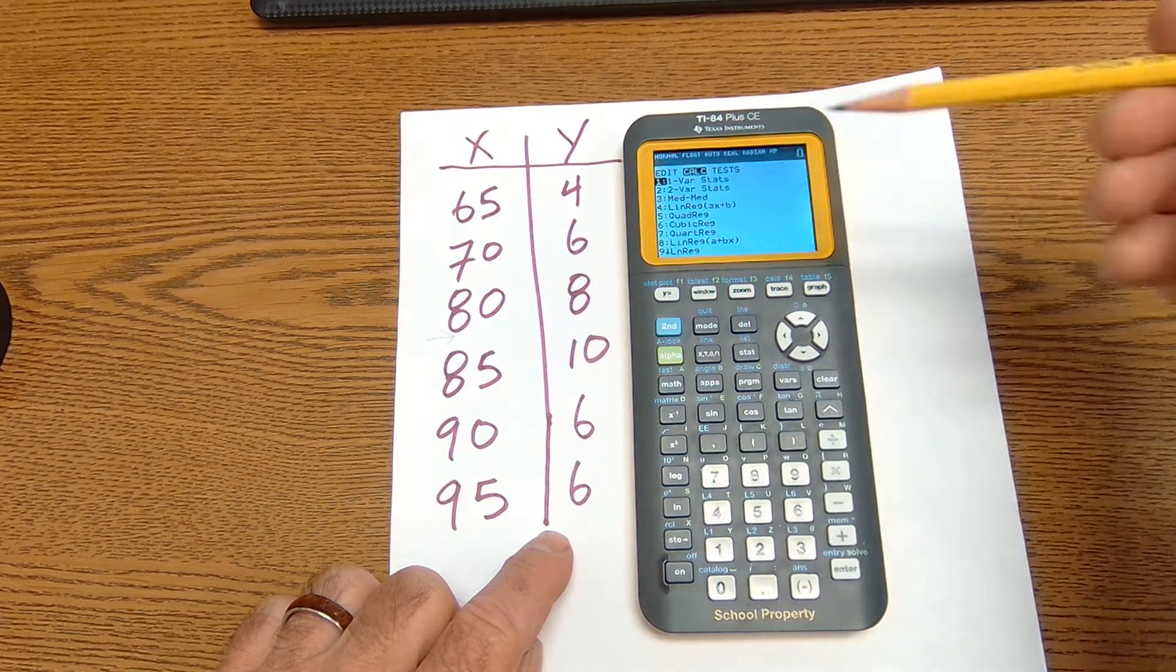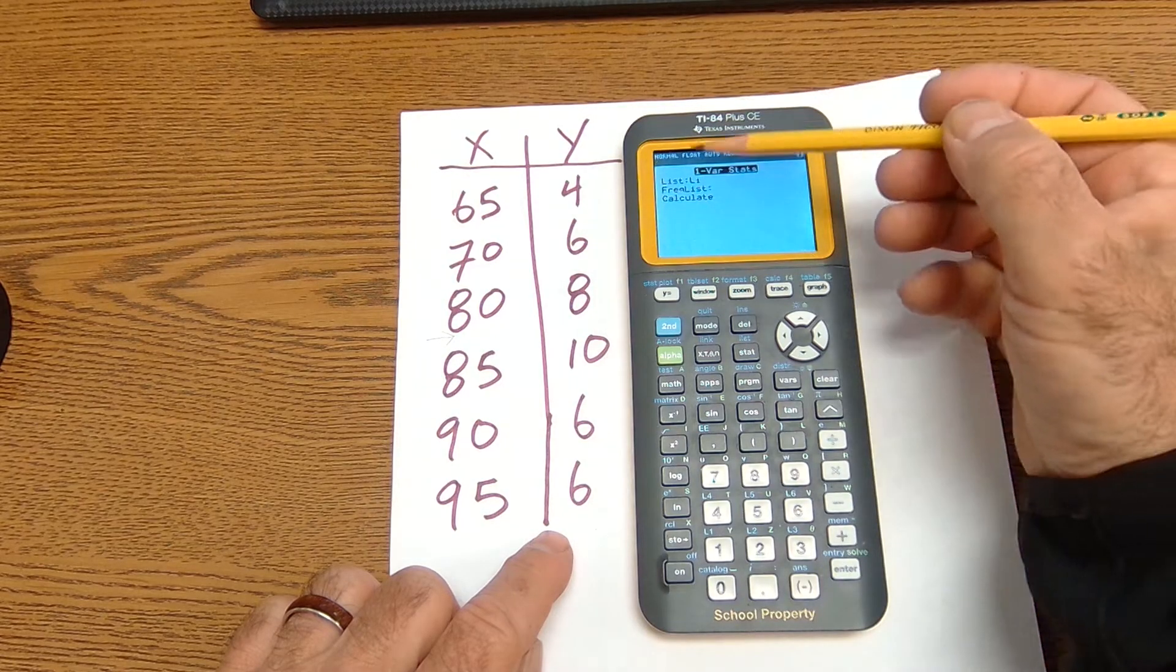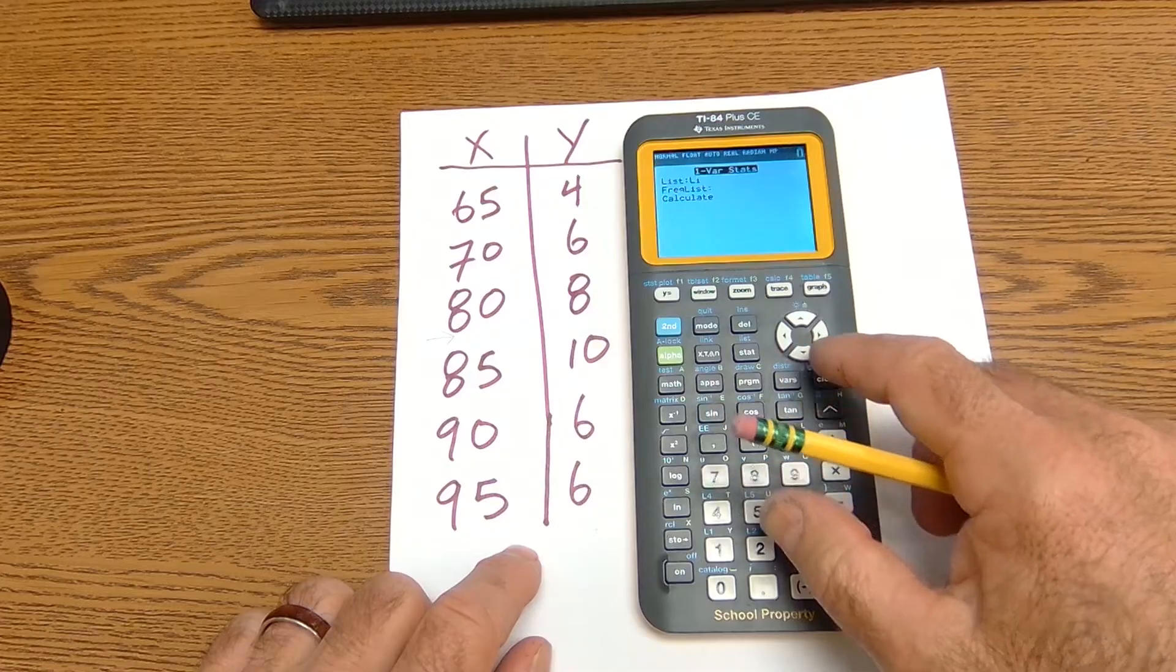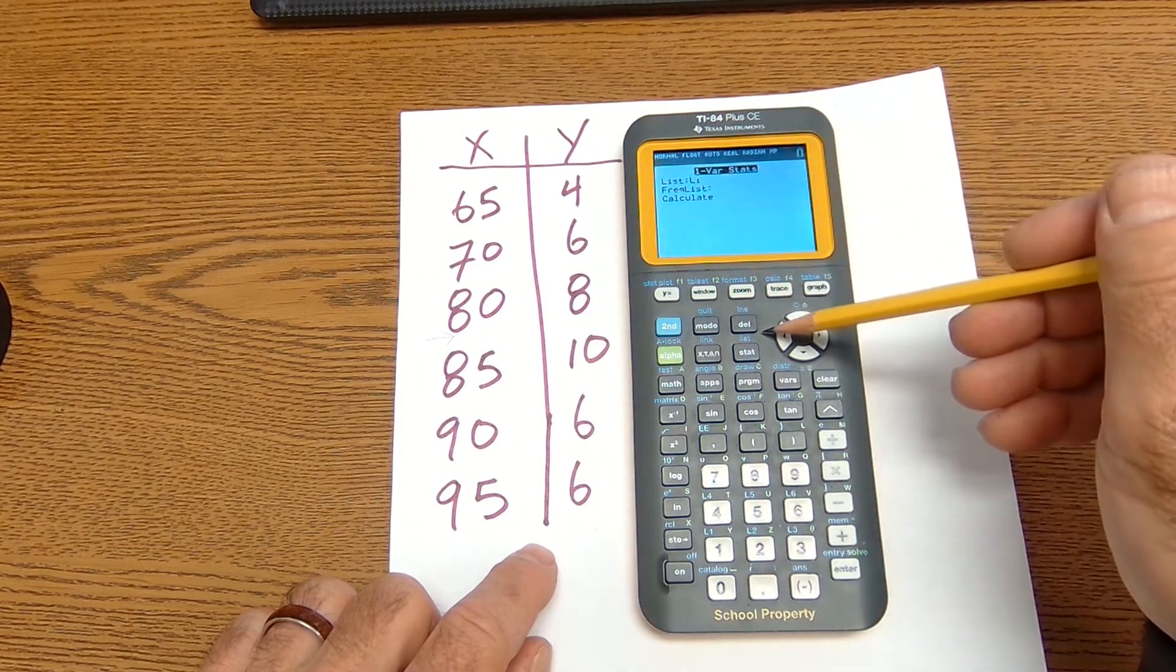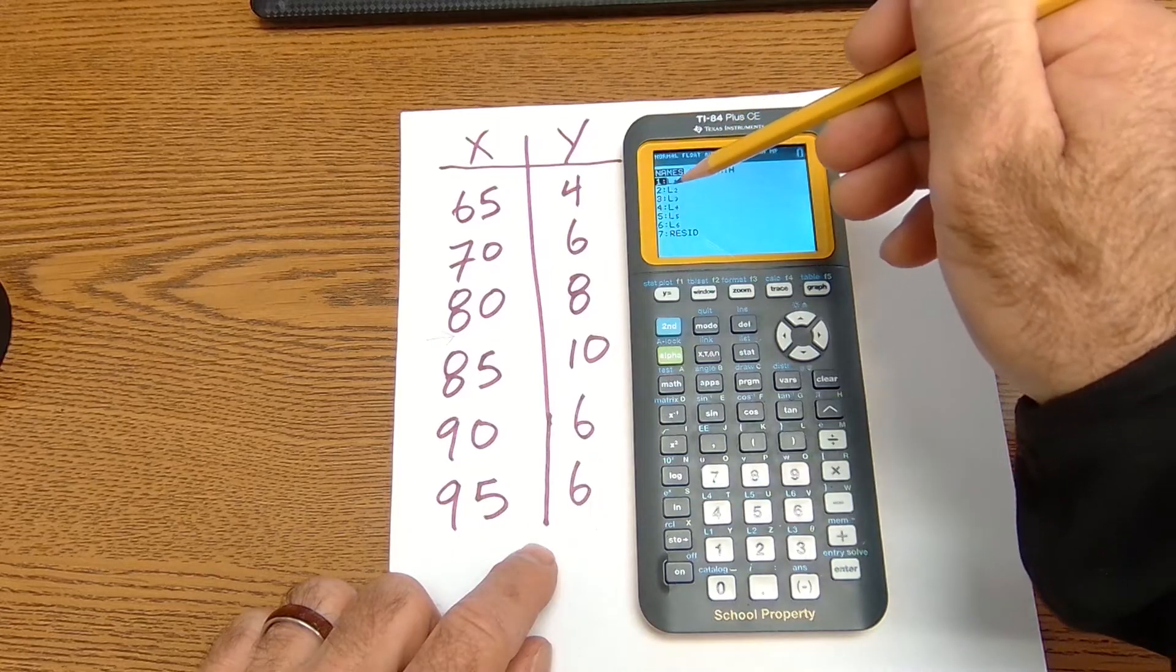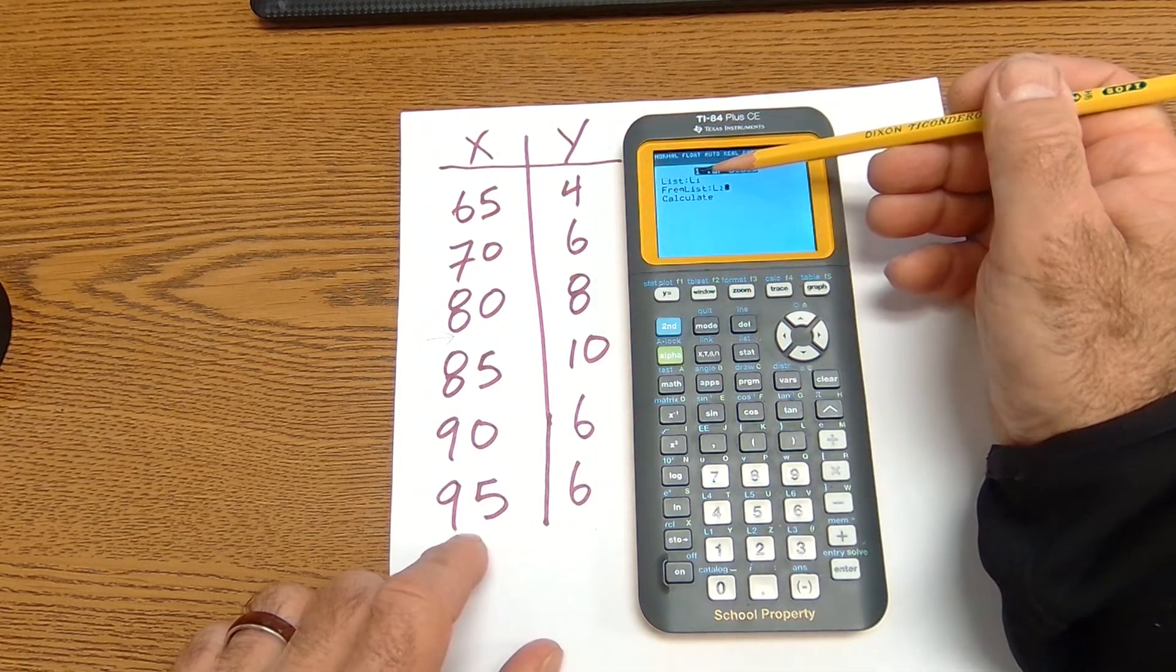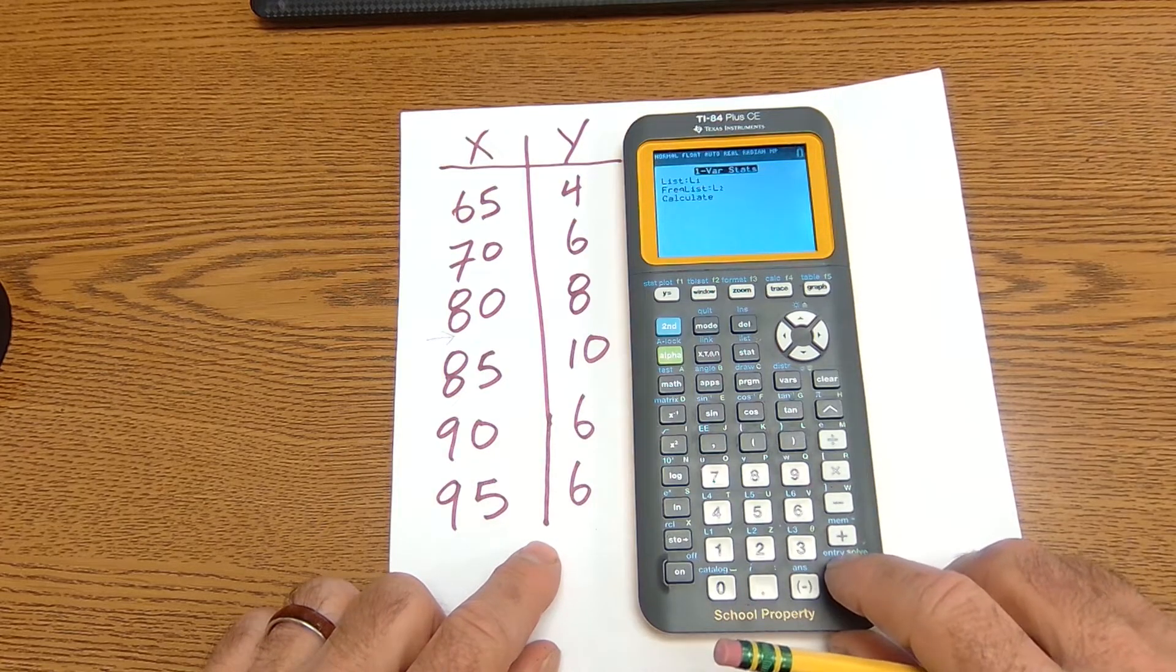So I'm going to go to stat, calc. I'm still doing one variable statistics, so I hit enter. My values are in list one. My frequency list, I'm going to scroll down to that, so I could hit enter. My frequency list is list two. So see in blue right here, it says list. I go second, list. I want list two, enter. So my actual values are list one. Frequency is list two. And then I hit calculate.